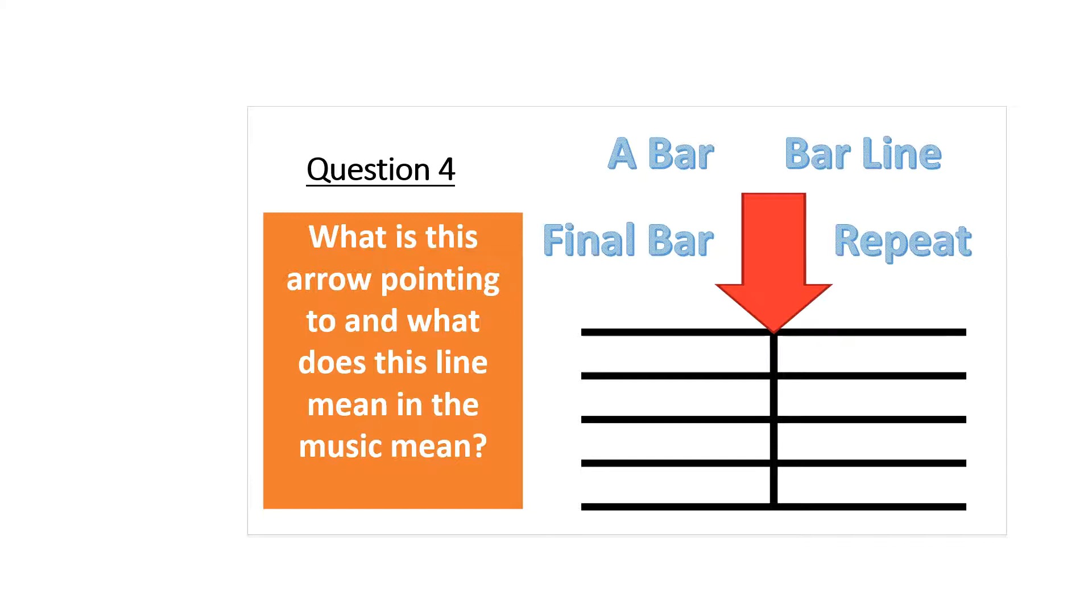Now on to question four. What is the arrow pointing to and what does this line mean in the music? Could it be the final bar? Is it a repeat? Is it a barline or is it a bar?